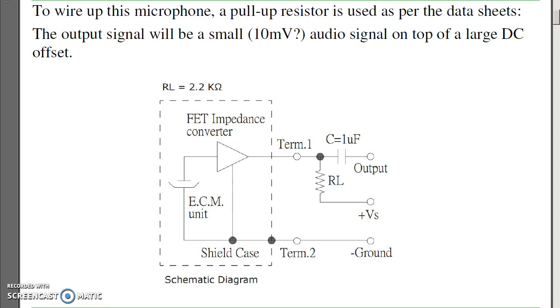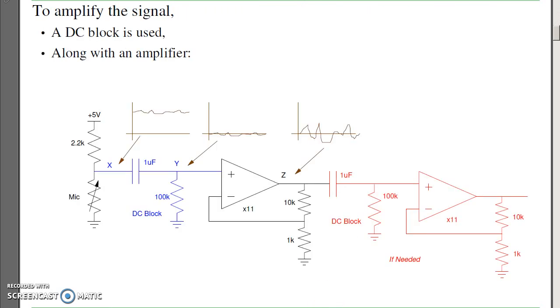To power one of these microphones, what you need is a ground point, obviously, and a pull-up resistor. Essentially, this is a variable resistance. With the pull-up resistor, if the resistance changes, I'm getting a variable voltage at terminal one. That variable voltage is then what I need to amplify to drive the rest of my circuit. Now, when I do that, I've got this pull-up resistor. They recommend about a 2.2 kOhm resistor. I'm going to have a very small audio signal at X with a large DC offset.